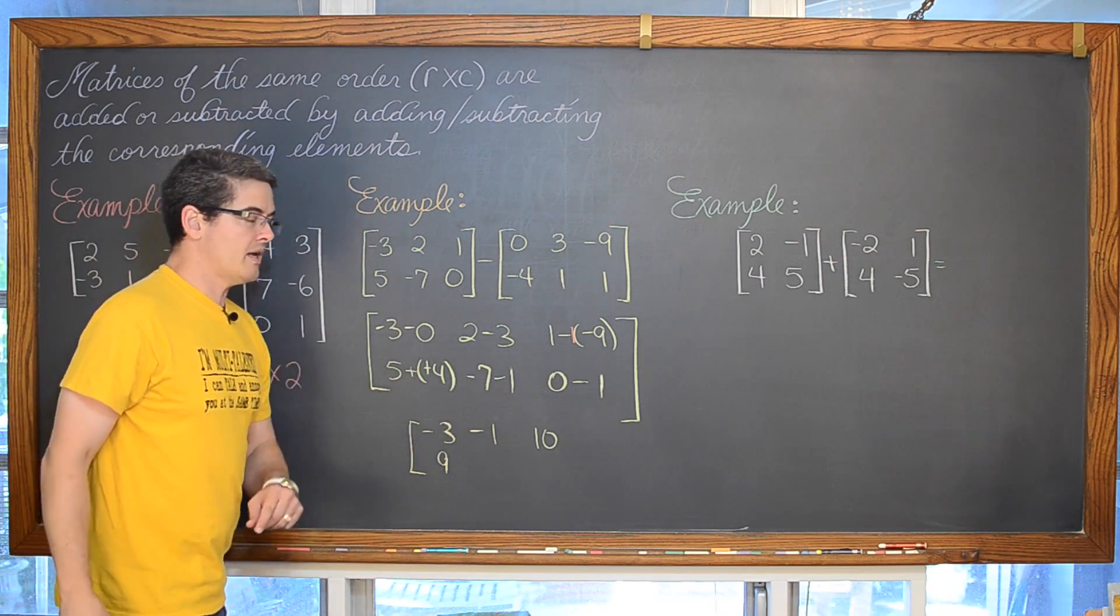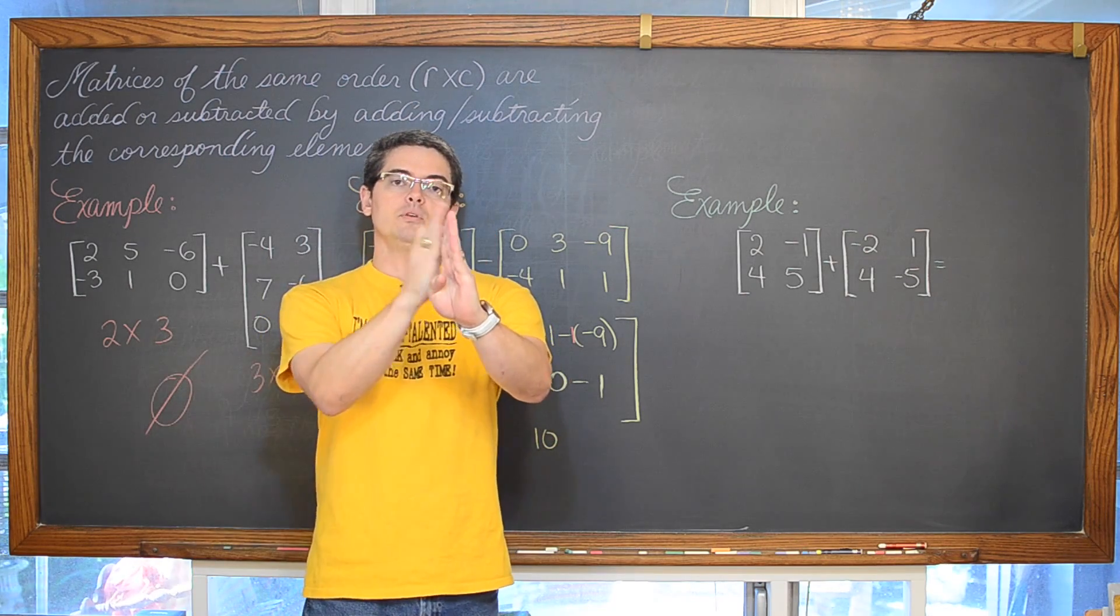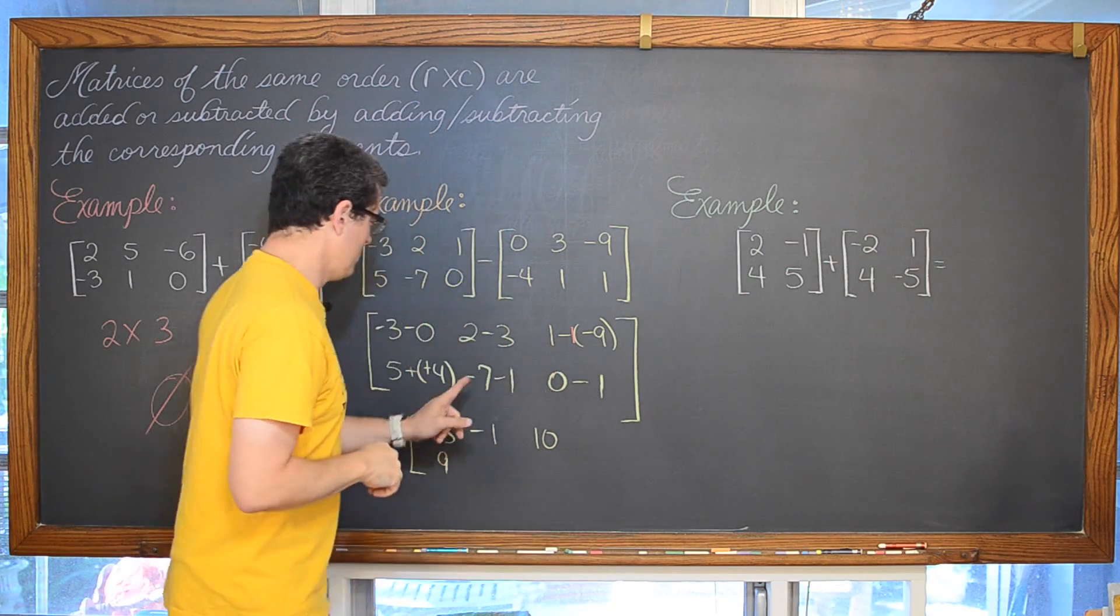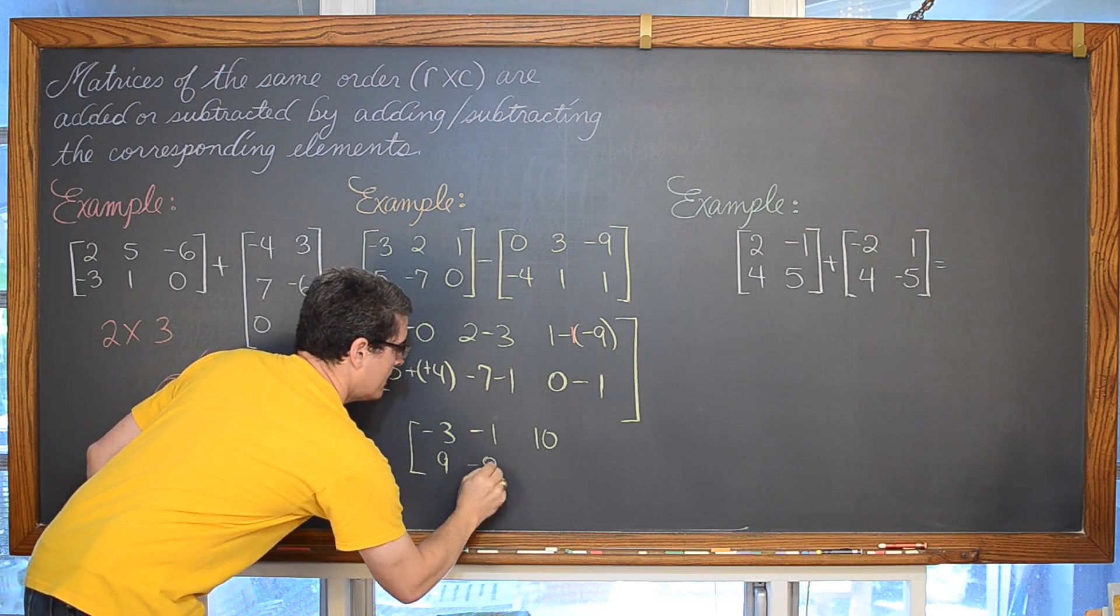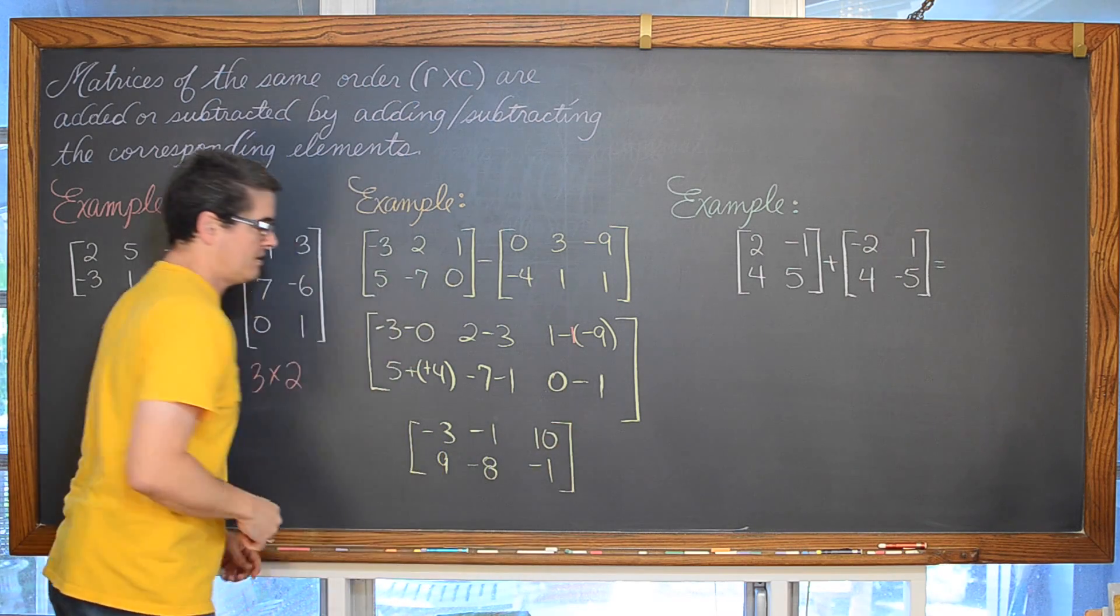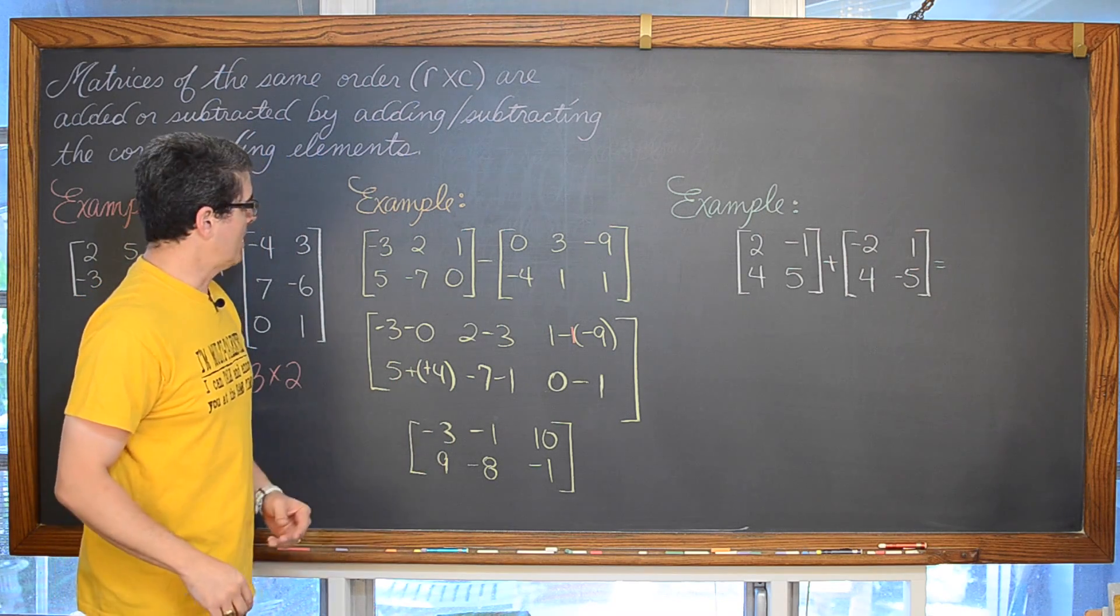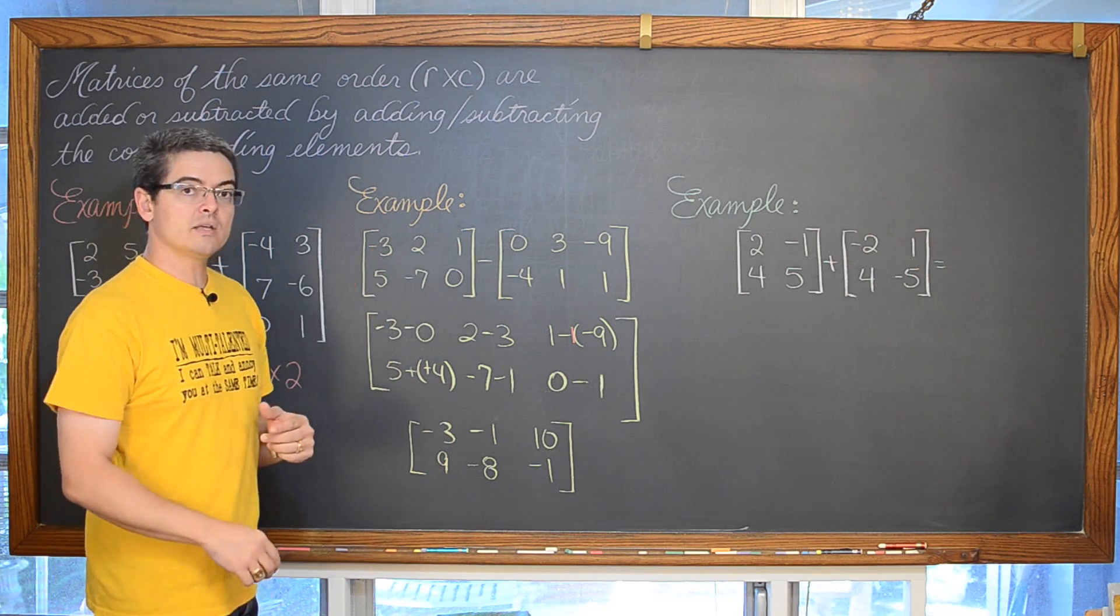Five plus four is equal to nine. Negative seven and negative one. Of course, subtraction is a movement to the left on the number line. So if you are at zero and you go left seven and left one more unit, you are at negative eight. And then finally, zero minus one is negative one. And that is our sum. That is our new matrix that we got from taking these two matrices and subtracting them.